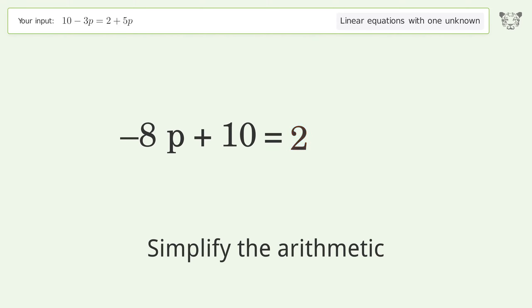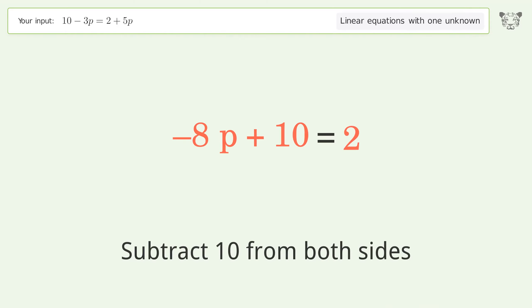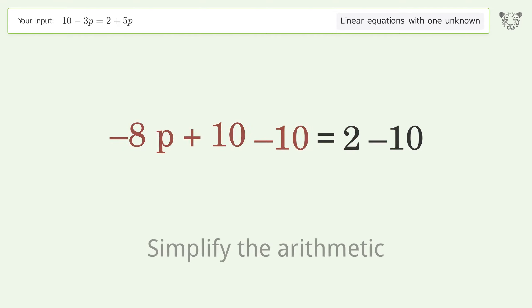Group all constants on the right side of the equation. Subtract 10 from both sides. Simplify the arithmetic.